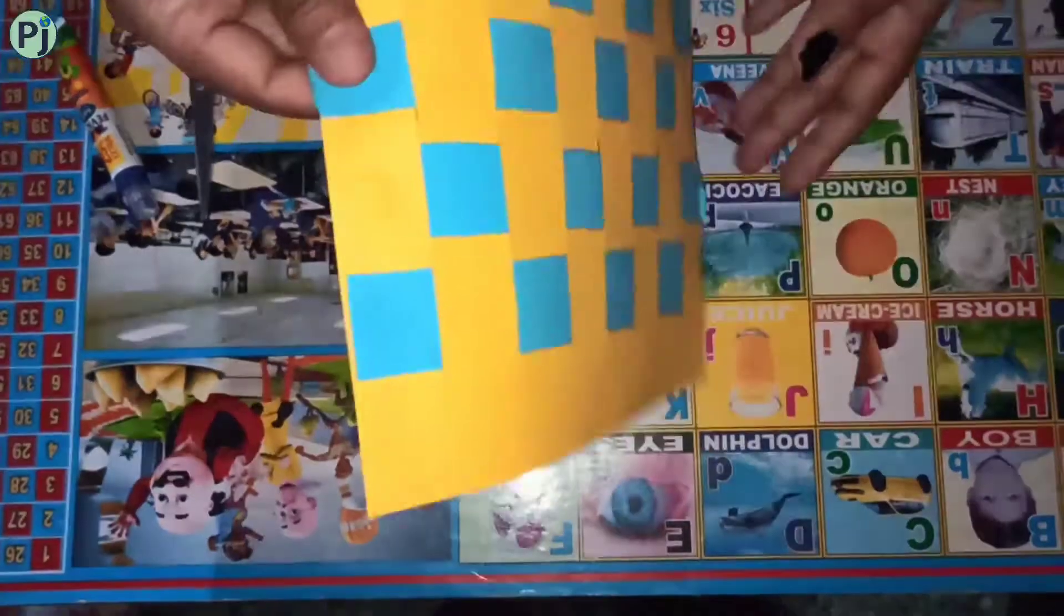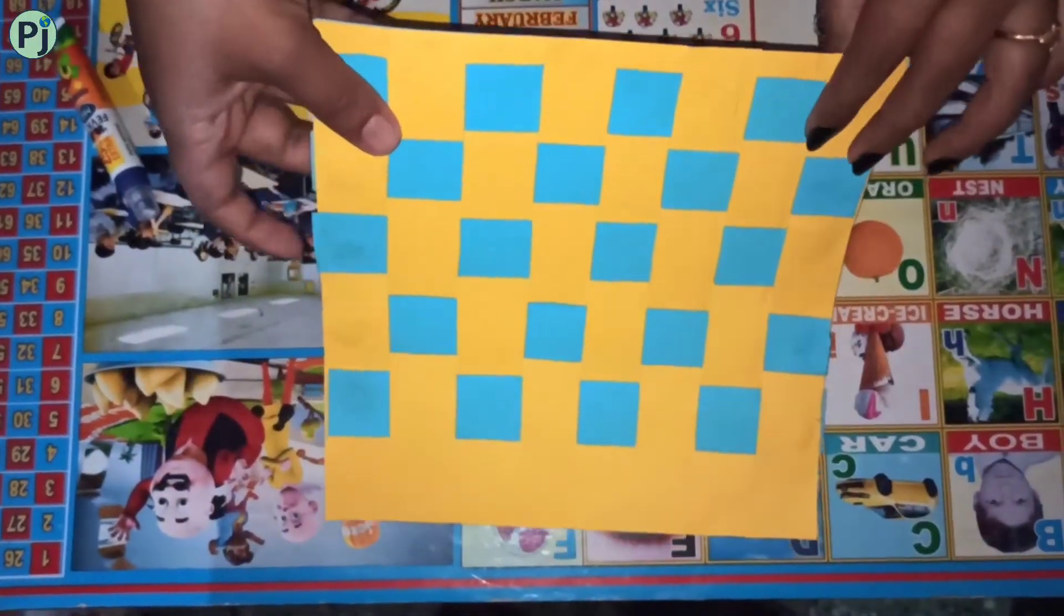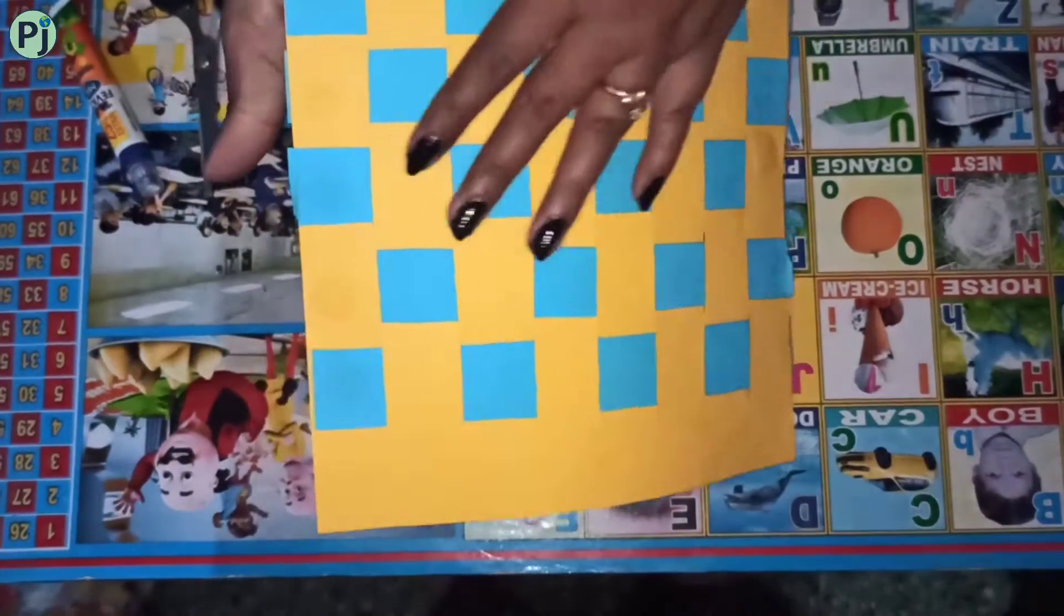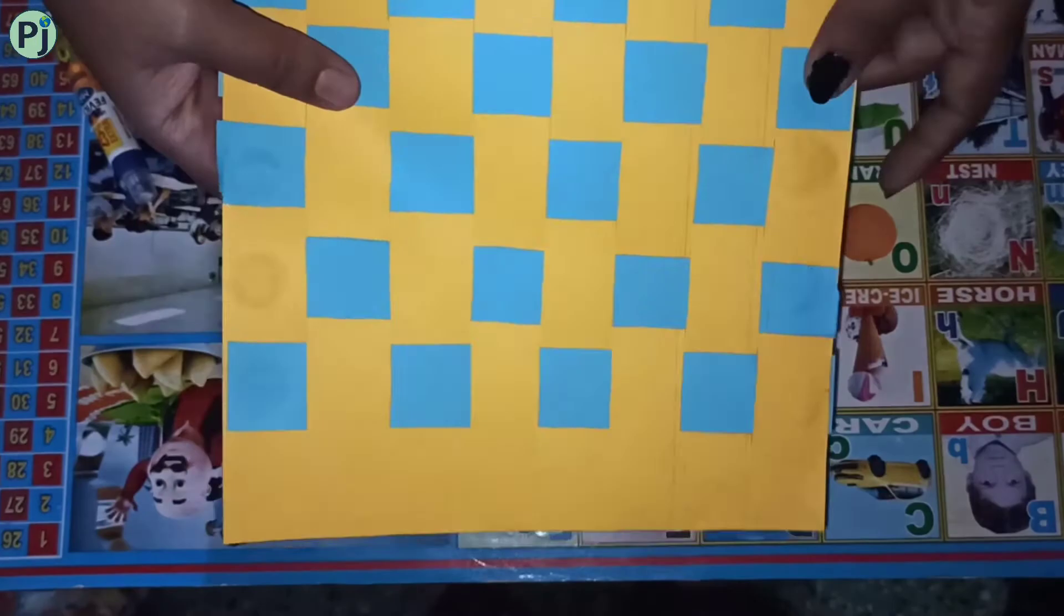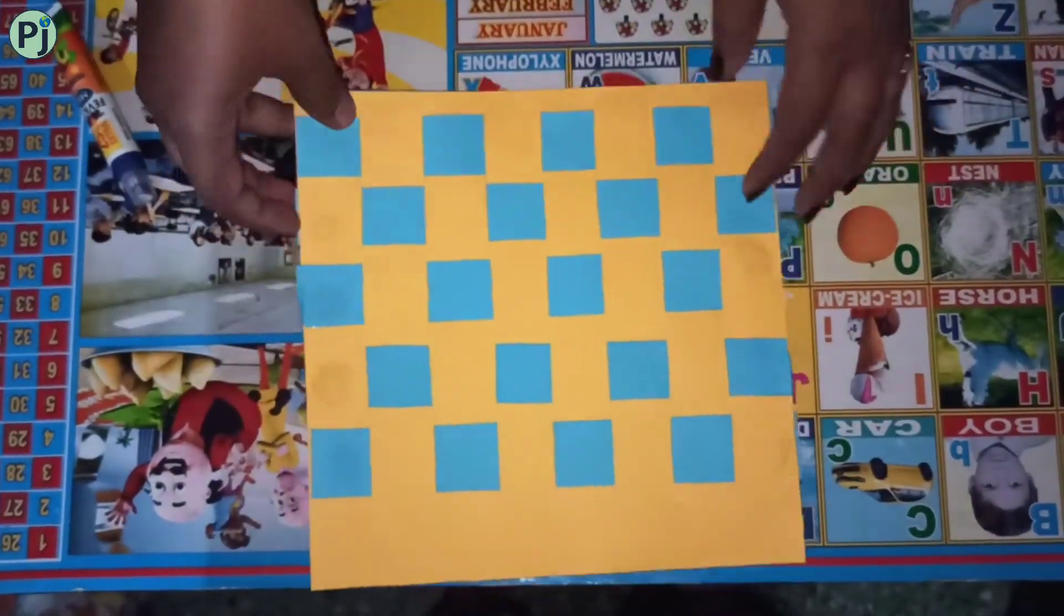See, your paper cloth or paper mat is ready. This is the same procedure which is followed by weaving cloths. The threads are weaved vertically and horizontally. And our cloth is ready.